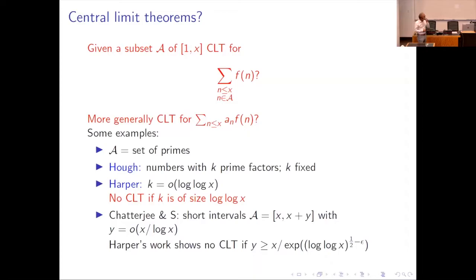Now I want to mention what will be the focus of this talk: coming up with situations where we can prove a central limit theorem. There is no central limit theorem for the sum over all integers up to x, but what if you restrict to some subset of the integers up to x? Can you prove a central limit theorem for certain subsets? What is the biggest kind of subset of one to x on which you can prove a central limit theorem? Or you could imagine considering sums of a(n) times f(n) where a(n) is some sequence, for example e to the 2 pi i n theta for some suitably chosen theta.